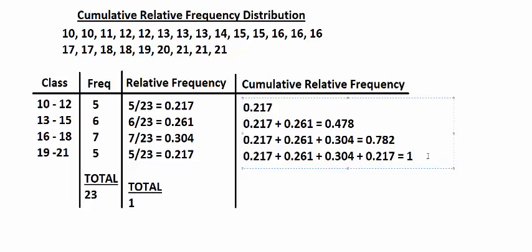The likelihood of data landing within the last class or a previous class is the same as saying the likelihood of a data value landing within the data set. So 100% of data is in the last class or a previous class. If you construct a cumulative relative frequency distribution correctly, this last class should always come out to be 1.